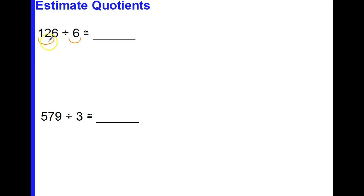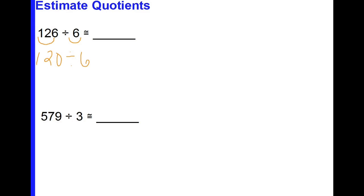Focusing on those digits is going to help me easily make this compatible. Right now 12 is already compatible with 6, so I don't have much work to do here. What I need to do is rewrite this as 120 divided by 6, because I am estimating my dividend of 126.